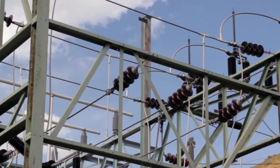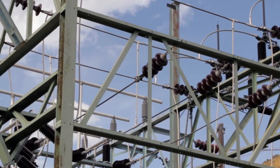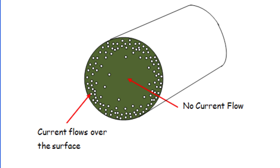The skin effect is a fascinating phenomenon that occurs in AC systems, where the current tends to distribute unevenly over the cross-section of a conductor. This results in the current density being highest near the surface of the conductor and decreasing exponentially towards the core. Simply put, the inner part of the conductor carries less current than the outer part, resulting in an increase in the effective resistance of the conductor.